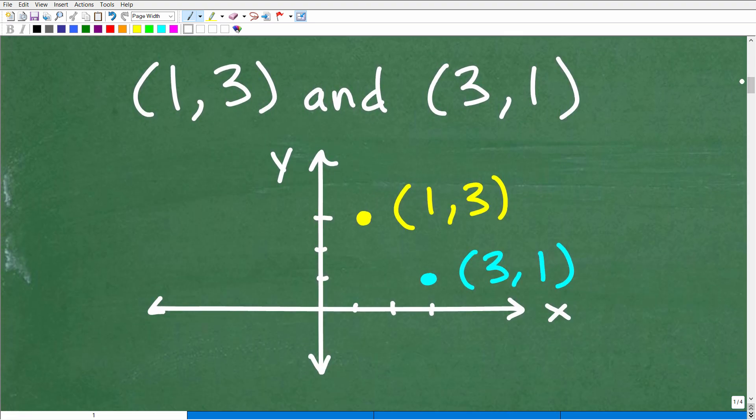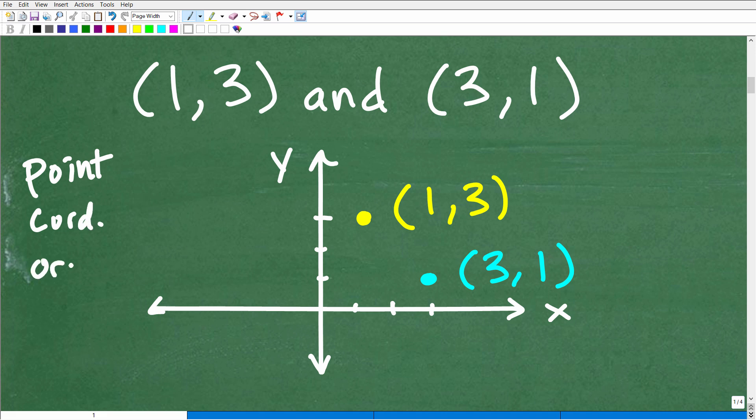So here, I have the point 1,3 and 3,1, and I'm going to plot these on the X,Y plane. Now, I'm using the term point, but in algebra, in mathematics, point is the same thing as what we call a coordinate, and it's the same thing as what we call an ordered pair.